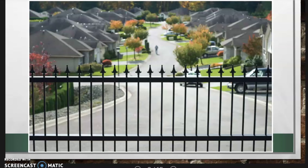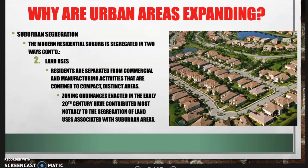This is an example of a segregated gated community in a Los Angeles suburb. Regarding land uses, residents are separated from commercial and manufacturing activities confined to compact distinct areas. Zoning ordinances enacted in the 20th century have contributed to the segregation of land uses within suburban areas, with housing plans designating residential-only land use.